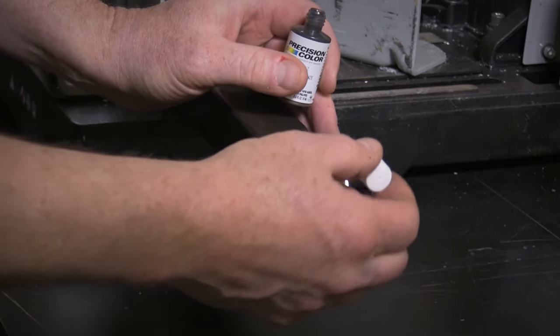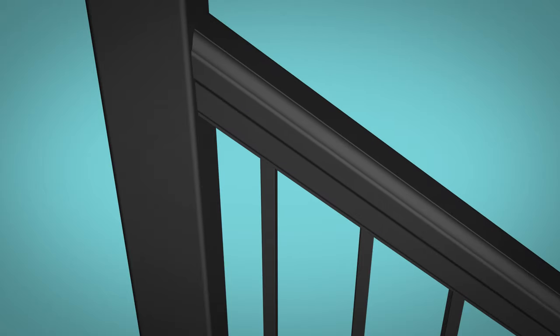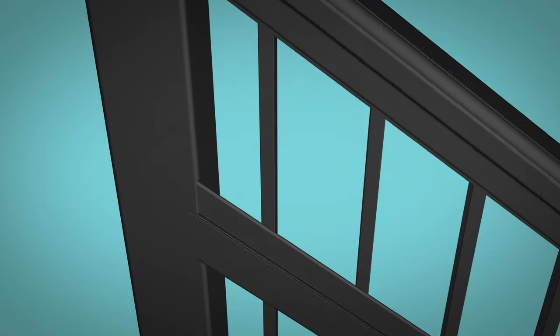Clean cut areas and apply touch-up paint on exposed ends. Snap each rail snap over the corresponding rail channel until properly seated.